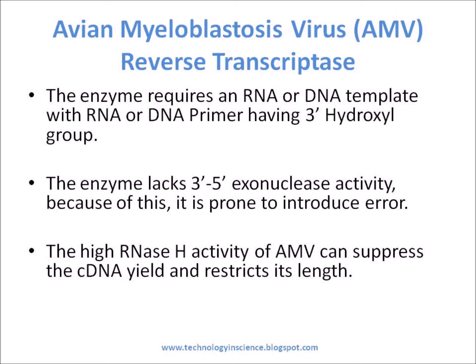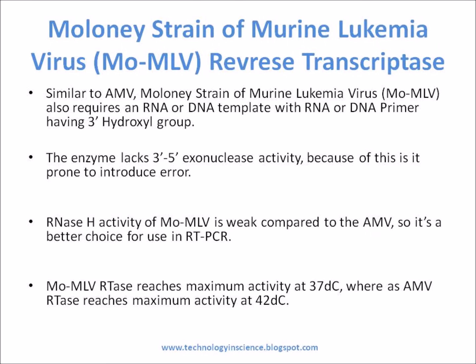The enzyme encoded by AMV is shown to have high RNase H activity, which digests the RNA moiety of an RNA-DNA hybrid, and can cleave at the template near the 3' terminus of the growing DNA strand if the reverse transcriptase pauses synthesis. The high RNase H activity of AMV can suppress cDNA yield and restricts its length.